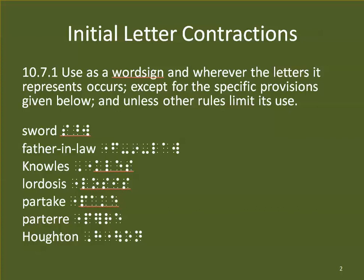The Braille reader knows that anything encountered on the right-hand part of the cell means read what's coming next a little differently. So here we are with initial letter contractions. We can use them as a word sign wherever the letters they represent occur, except for specific provisions given in the next few screens and unless other rules limit its use — that's the caveat for UEB, so we need to know those other rules.